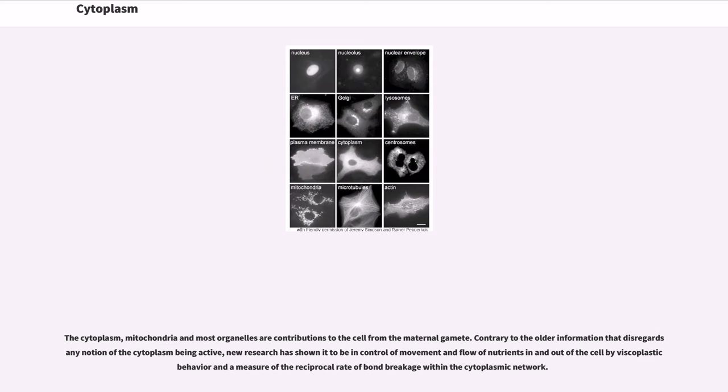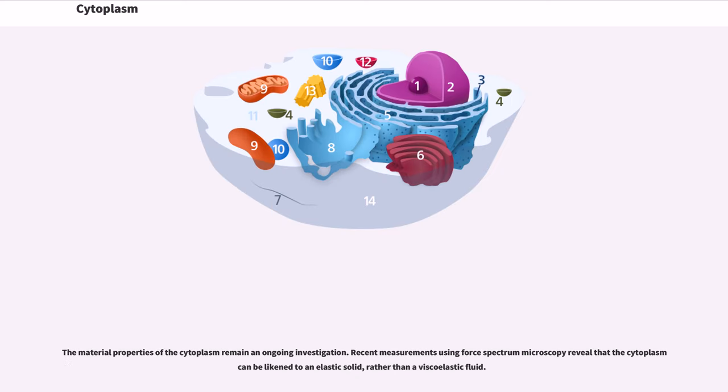The cytoplasm, mitochondria and most organelles are contributions to the cell from the maternal gamete. Contrary to the older information that disregards any notion of the cytoplasm being active, new research has shown it to be in control of movement and flow of nutrients in and out of the cell by viscoplastic behavior and a measure of the reciprocal rate of bond breakage within the cytoplasmic network.